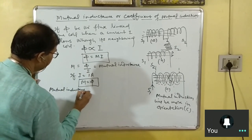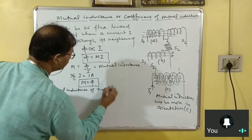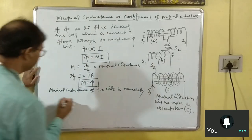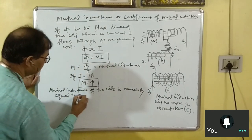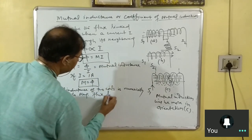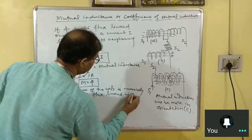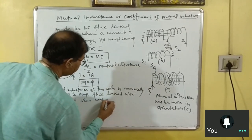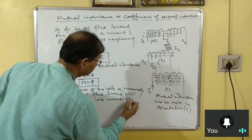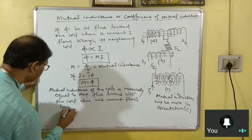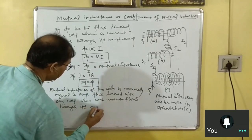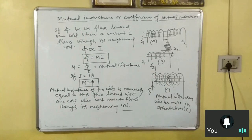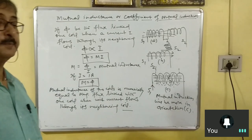So you can write the definition: mutual inductance of two coils is numerically equal to the magnetic flux linked with one coil when unit current — that is, one ampere — flows through its neighboring coil. This is one definition of mutual inductance. Remember, mutual inductance depends upon geometry, that is, the area of each turn.